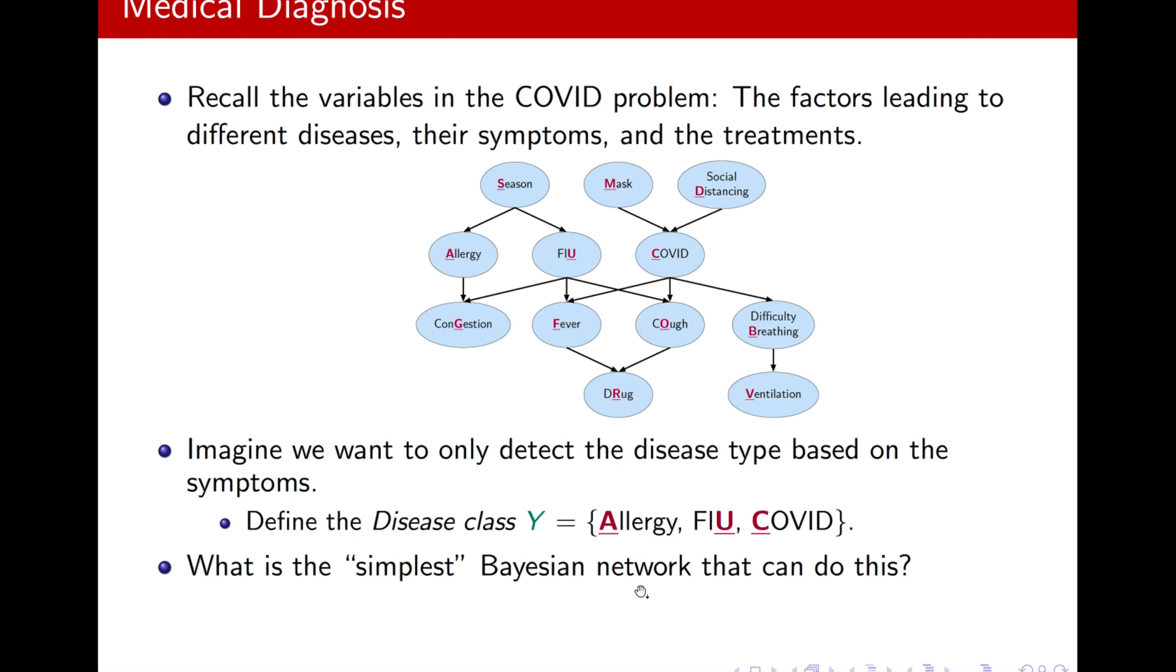What is the simplest Bayesian network that can do this for us? What do I mean by a simple Bayesian network? Well, intuitively, that means with not too many links, or namely, the Bayesian network with the greatest independencies, because the more independencies we have, the more factorizations we can exploit, and we can factorize it into simpler network.